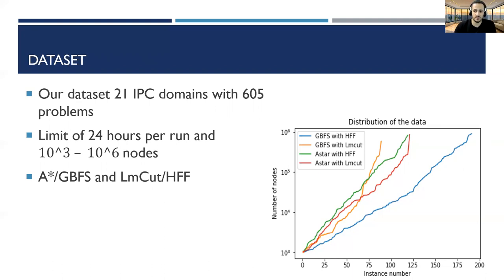The planners we used were A-star and GBFS using LMCAT and HFF as a heuristic. In the right plot, we show the distribution of the data with different configurations. As you can see, GBFS with HFF solved more problems than others in the limits we defined.